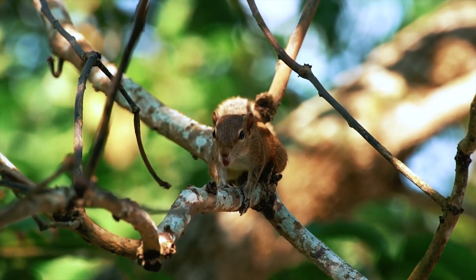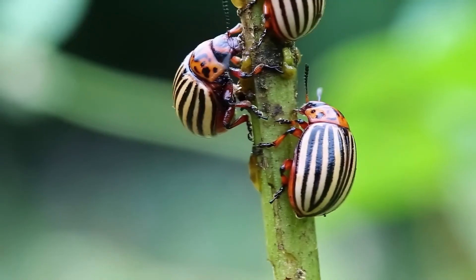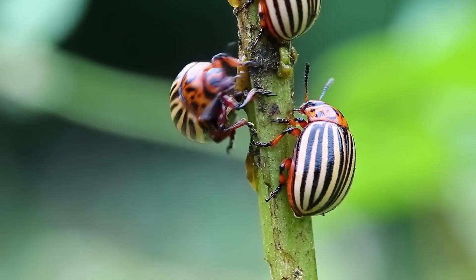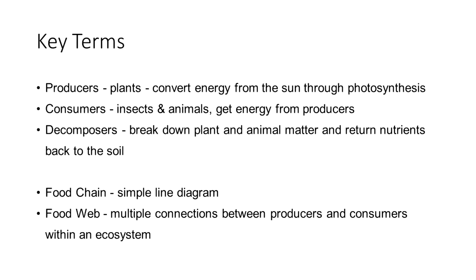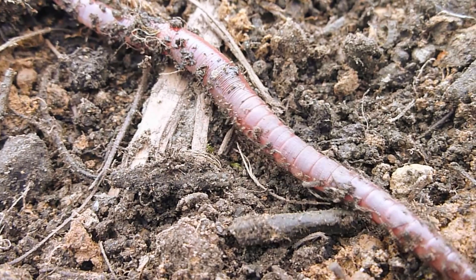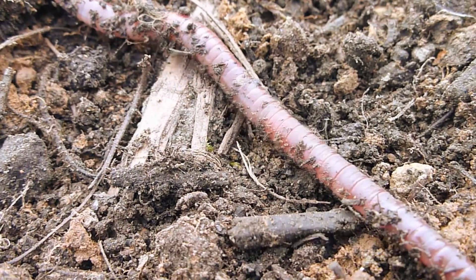Consumers are insects and animals and they get their energy from producers. Decomposers break down plant and animal matter and return nutrients back to the soil.